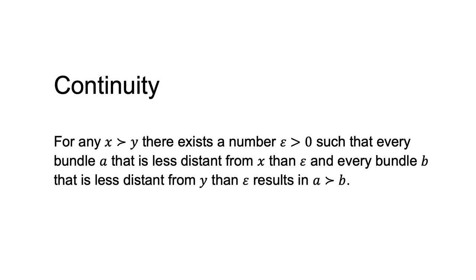Definition 1. A preference relation is continuous if for any x strongly preferred to y, there exists a number epsilon greater than zero, such that every bundle a that is less distant from x than epsilon, and every bundle b that is less distant from y than epsilon, results in a being strongly preferred to b.